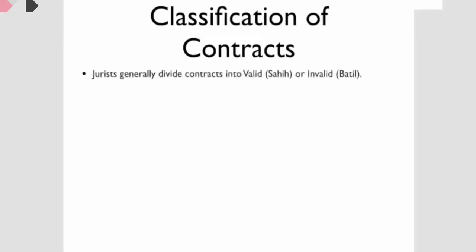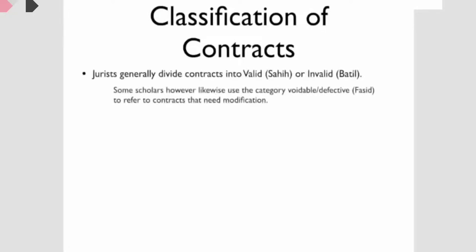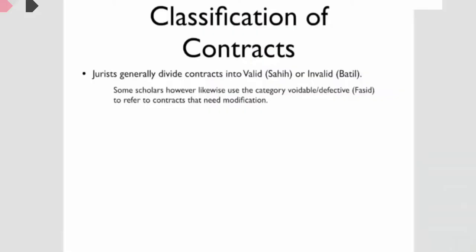A contract could be valid or non-valid. If all of the elements are found to be in order, we would say that contract is valid, and if there are deficiencies, we would say the contract is not valid. In some schools of thought, like the Hanafi school of thought, they would have a sort of third category,